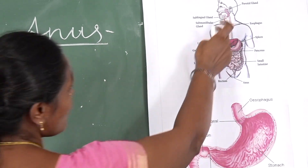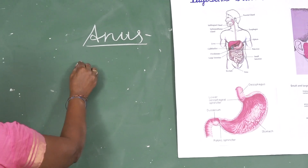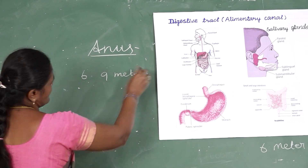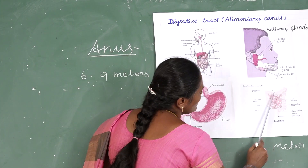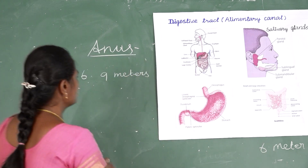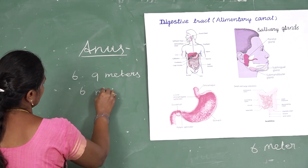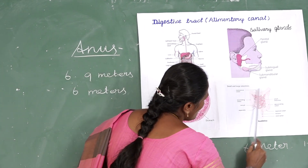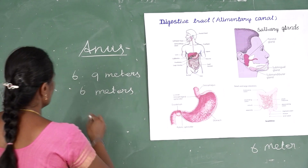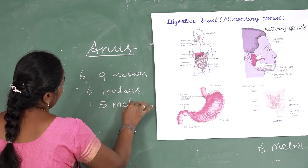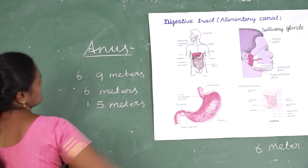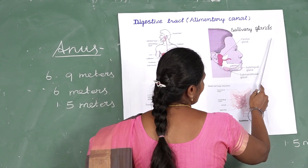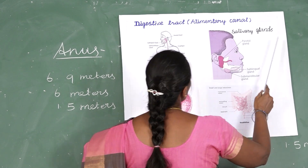What is the length of the alimentary canal? 6 to 9 meters. What is the length of the small intestine? 6 meters. What is the length of the large intestine? 1.5 meters. Which is the largest salivary gland? The parotid is the largest salivary gland.